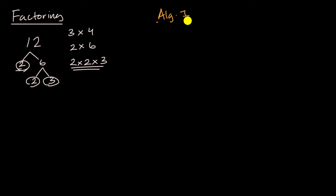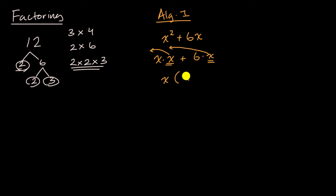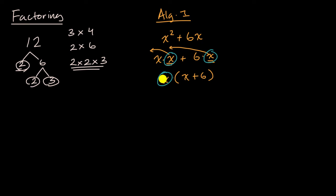In Algebra 1 — and sometimes this might be in a Math 1 class or even a pre-algebra class — you learn things like, how do I factor x squared plus six x? You might recognize that x squared can be rewritten as x times x, and six x really just means six times x. Both of them have x as a factor, so we factor that out and rewrite the entire expression as x times x plus six. What we just did is factored out the x's. So in general, if you're thinking about numbers, you're writing one number as the product of other numbers; if you're thinking about expressions, you're writing an expression as the product of other expressions.